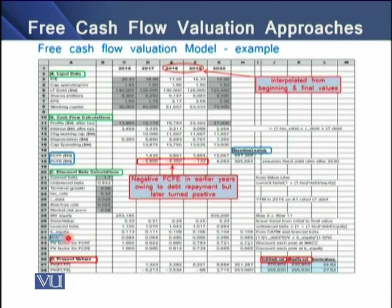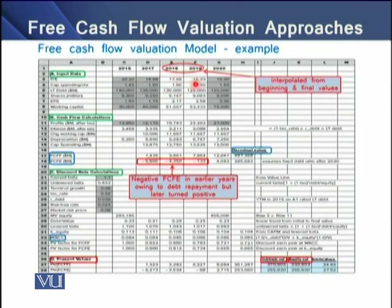Using that WACC, we have a present value factor for each of FCFF and FCFE, and finally we have the present values for the firm's free cash flow to the firm and free cash flow to equity. We have actual data from 2016, 2017, and 2020. For 2018 and 2019, highlighted in gray, the data has been gathered through interpolation from the beginning and final values.